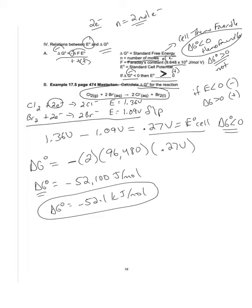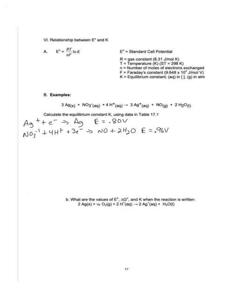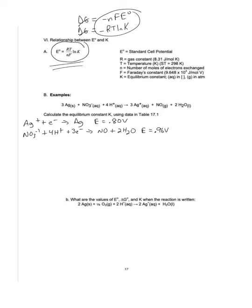This equation on your green sheet allows you to flip back and forth between the voltage of the cell and the Gibbs free energy value. We can also use the cell potential to calculate the equilibrium constant K. The working equation is actually a combination of two reactions: ΔG = -nFE and ΔG = -RT·lnK. Setting those G's equal to each other and isolating for E gives us the working equation E = (RT/nF)·lnK.